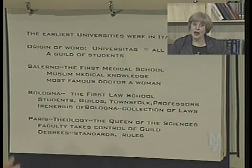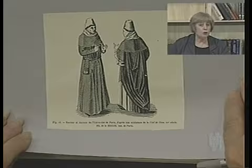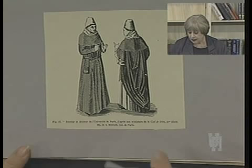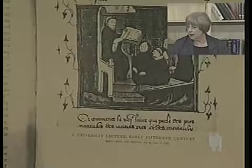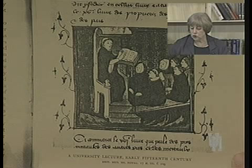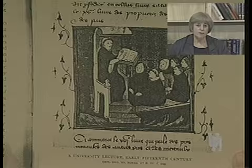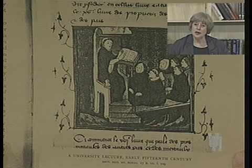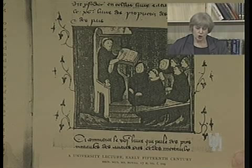In Paris, the faculty turned the tables on the students — it was the faculty who organized the universitas, the guild of the University of Paris. At Paris, the emphasis was on theology, the queen of the sciences. The faculty set up regulations for classes, final exams, degrees, and standards that students had to meet in order to graduate. Those are the rules we follow today — our universities are directly modeled on these. Our academic robes are medieval; we wear monk's robes at graduation. At about this time, there was a boom in book copying, with copying factories opening up in university cities to copy books and sell them to students.